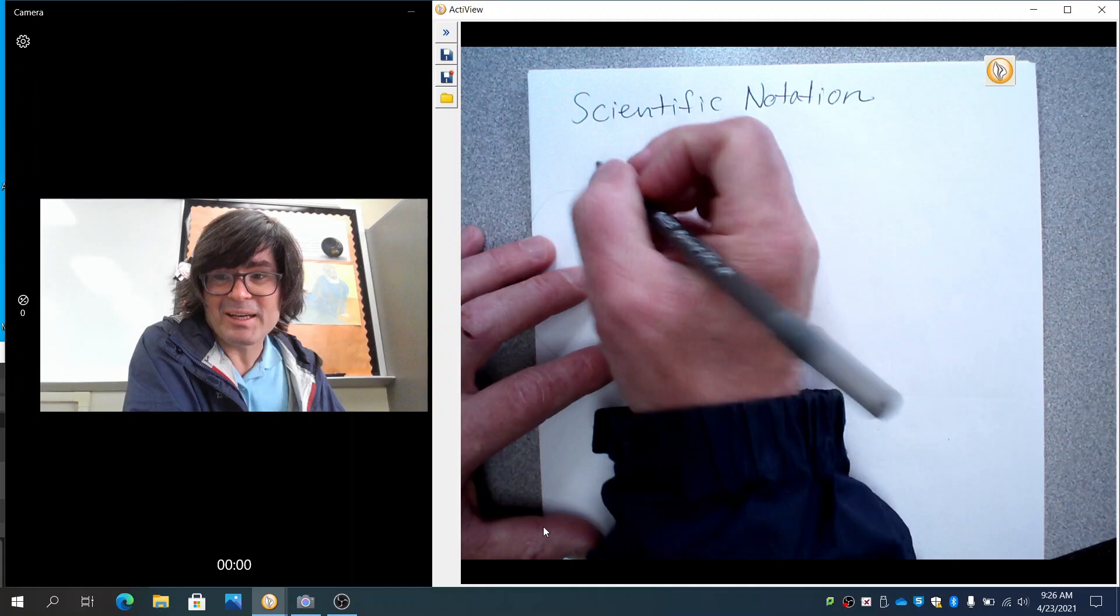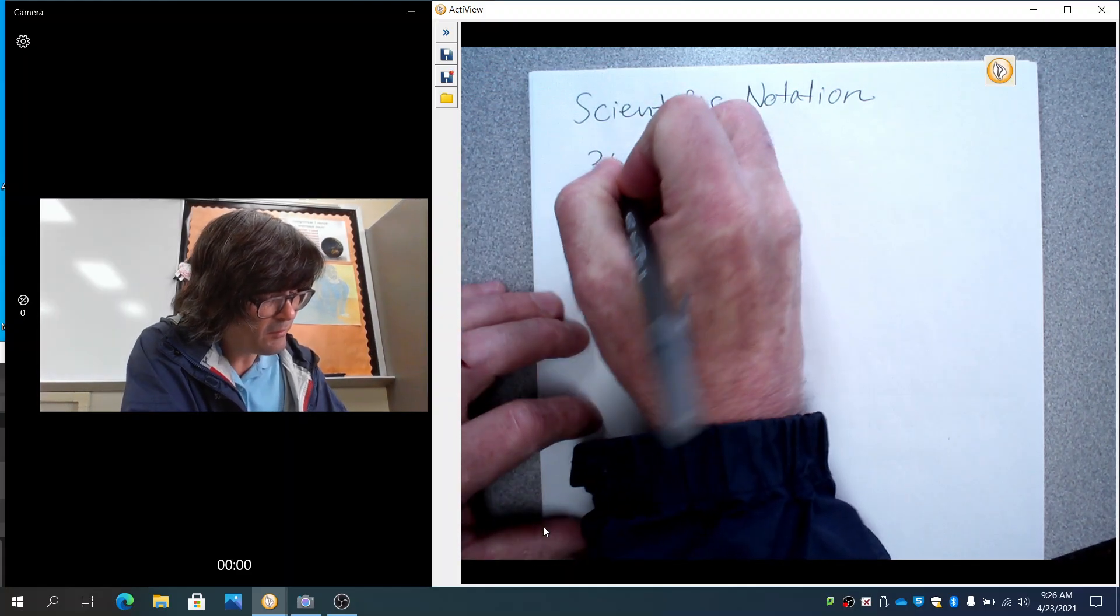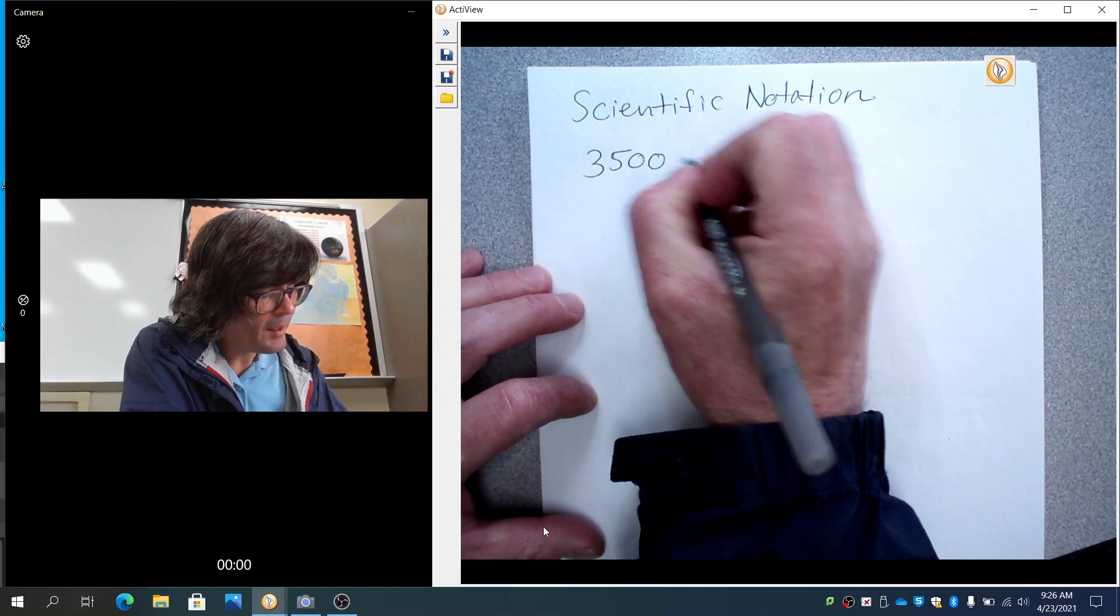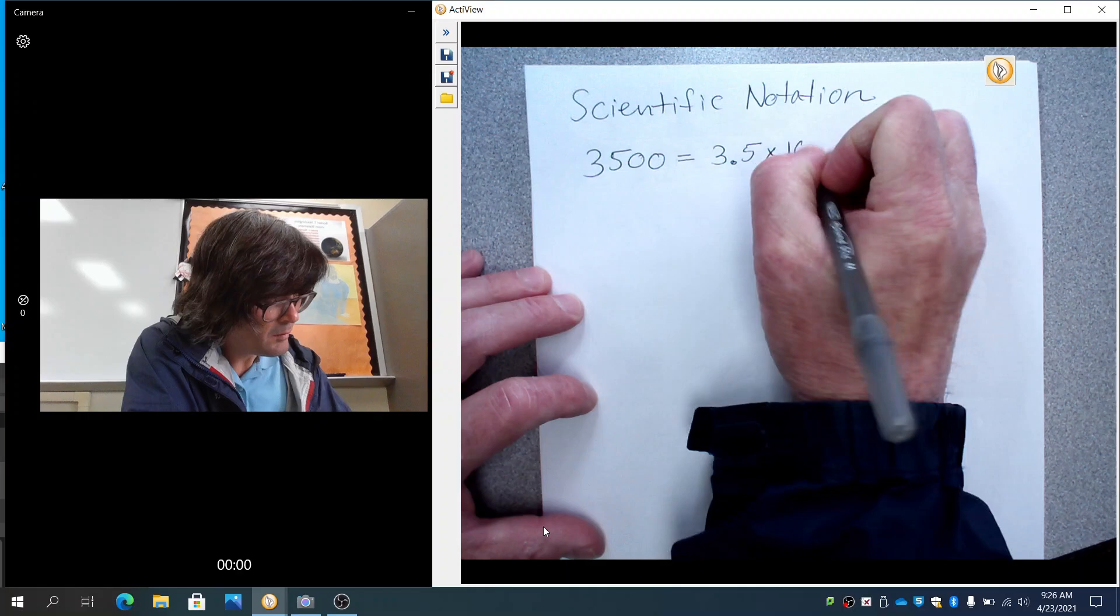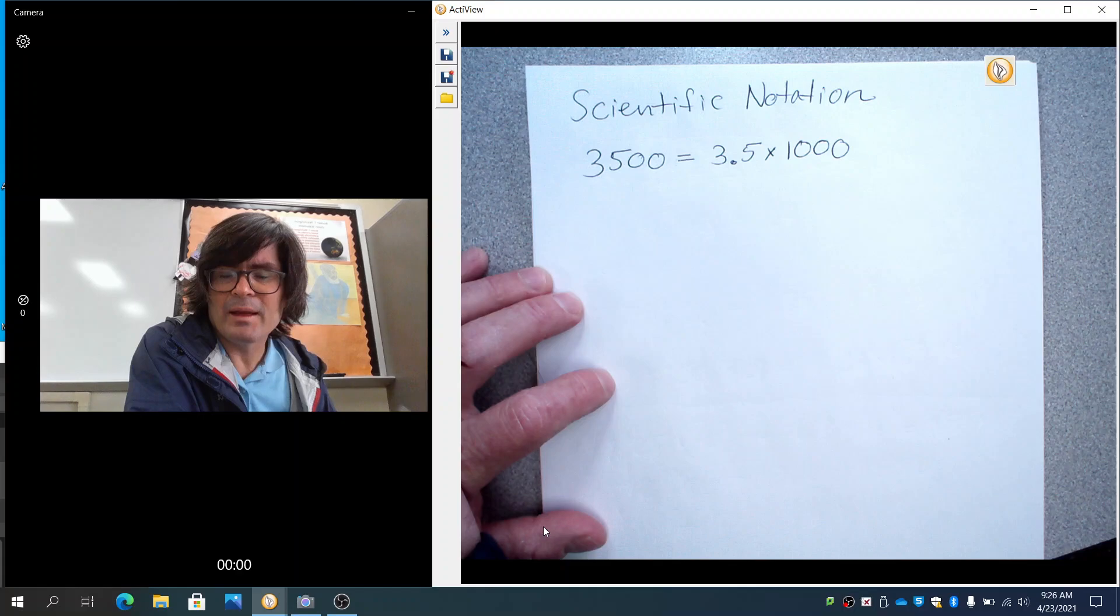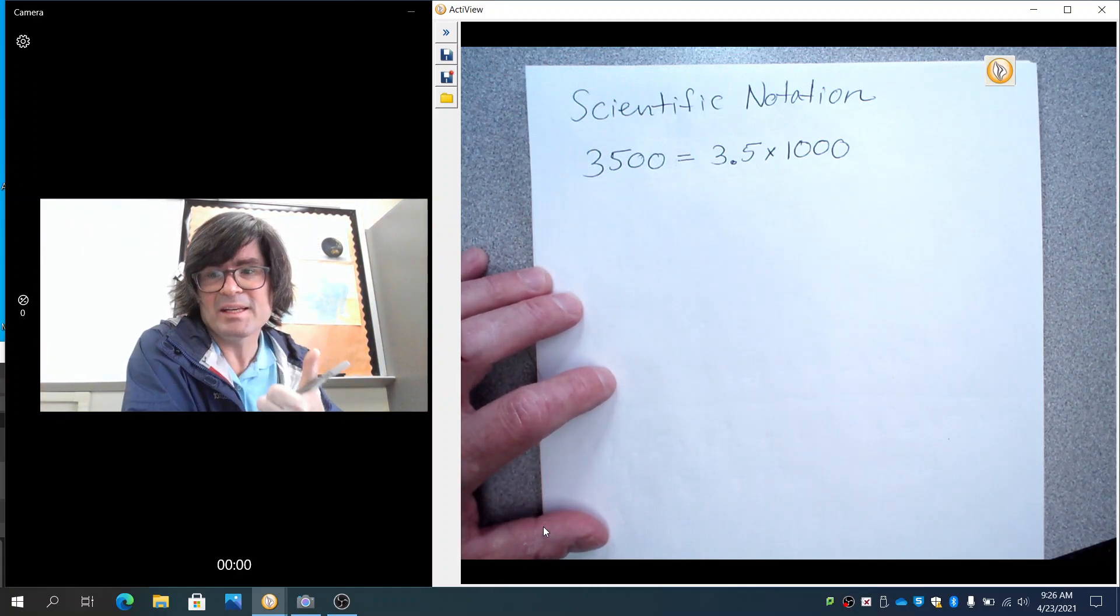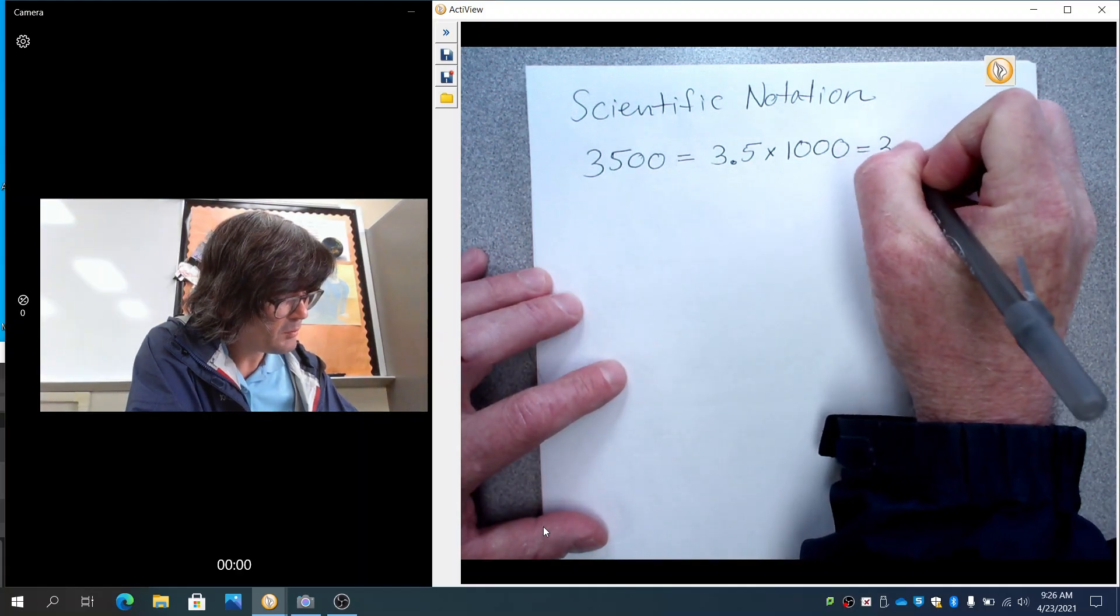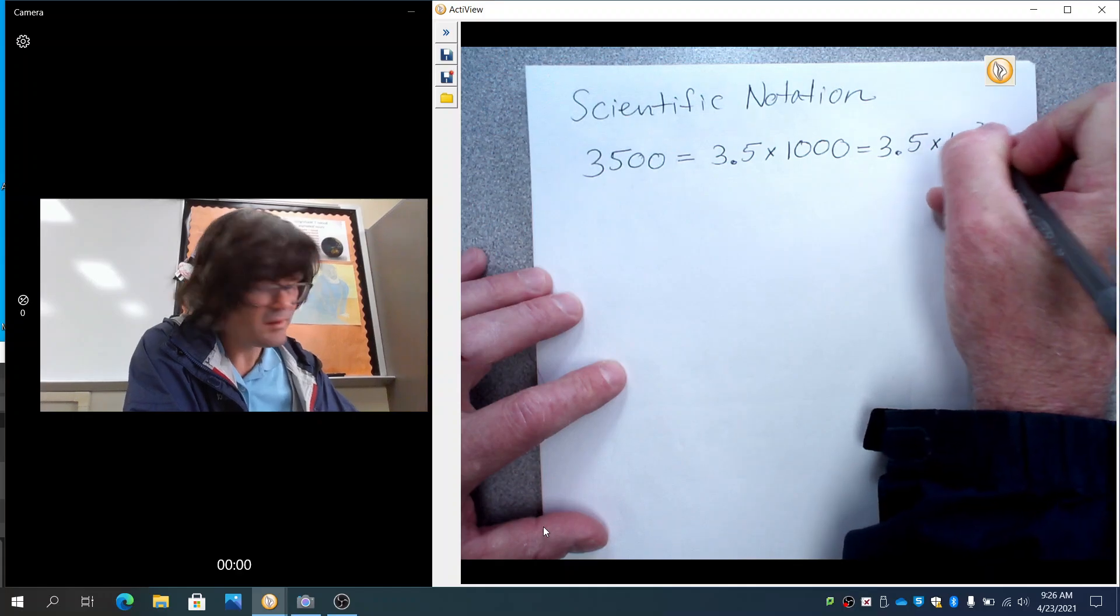Scientific notation is a way to take a really big number or really small number and make it workable. For example, if you have 3,500, which is a fairly big number, that is the same as 3.5 times 1,000. And 1,000 can be written as 10 to the third because it's 10 times 10 times 10. So I'm going to rewrite this as 3.5 times 10 to the third.